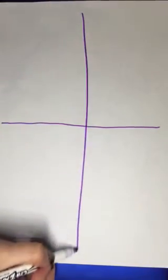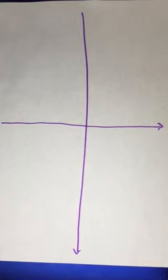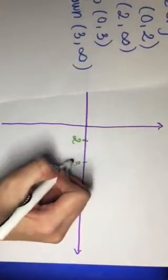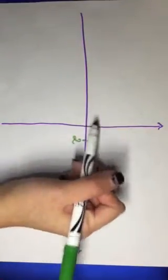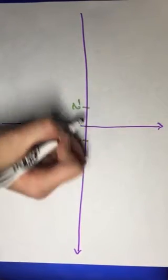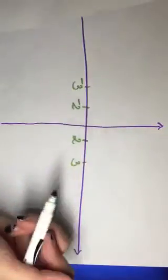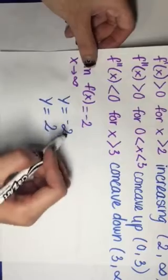Now I'm going to draw the X and Y axes. Looking at our information, we have the point (0, 0), and key x-values at x = 2 and x = 3. Because the graph is symmetric about the origin, we also mark x = -2 and x = -3.